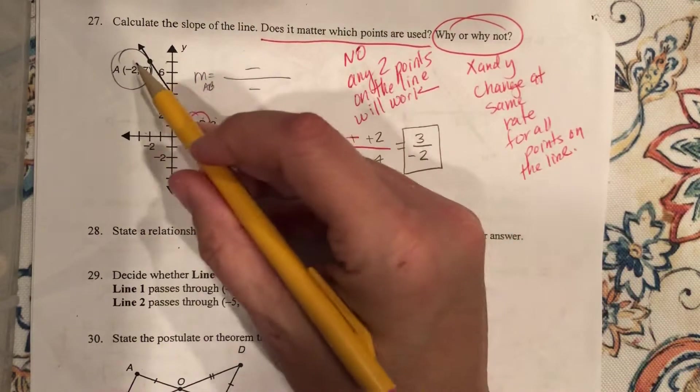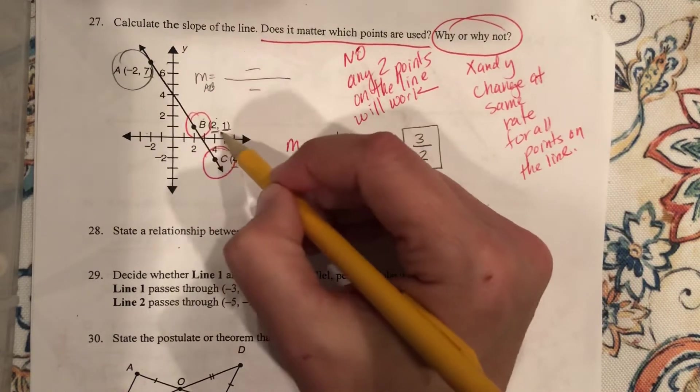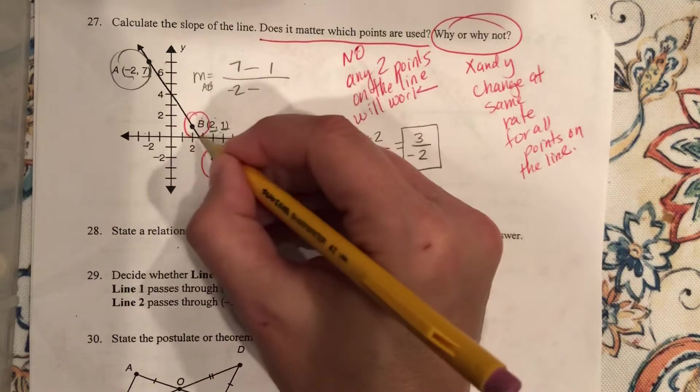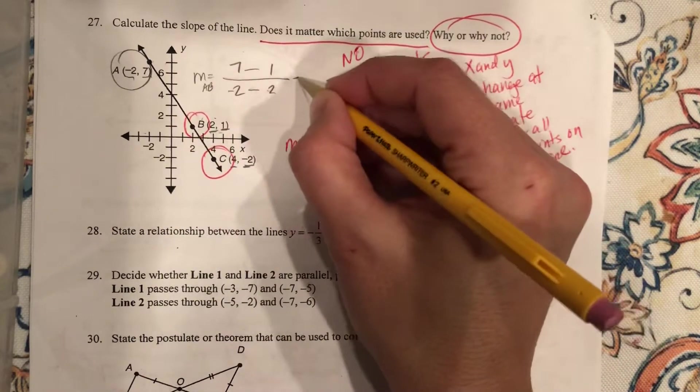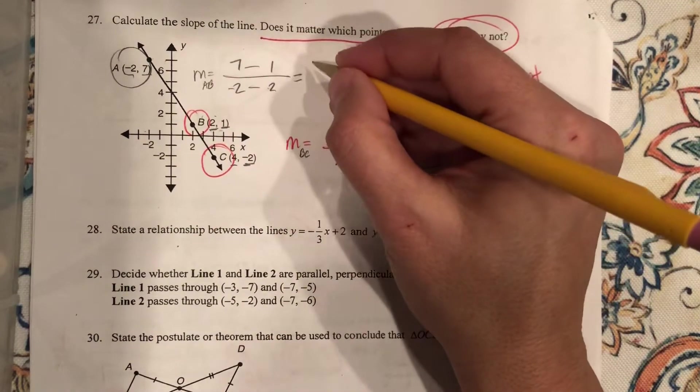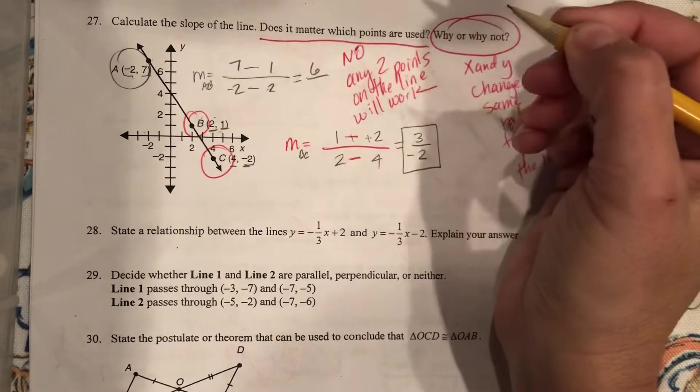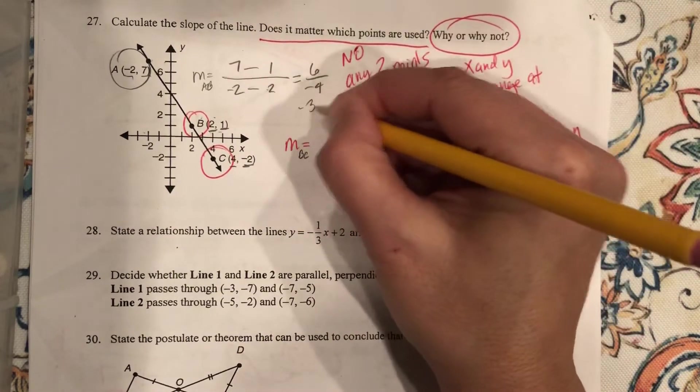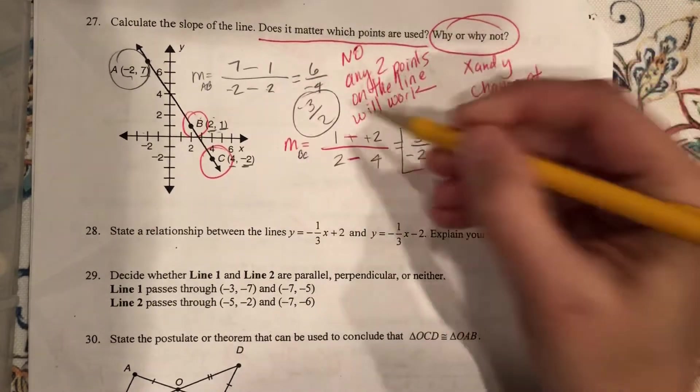Let's do the slope of A and B. What are my two Y's? 7 and 1. And what are my two X's? Negative 2 and 2. So, 7 minus 1 is 6. Negative 2 minus 2 is negative 4. What does that reduce to? Same thing.